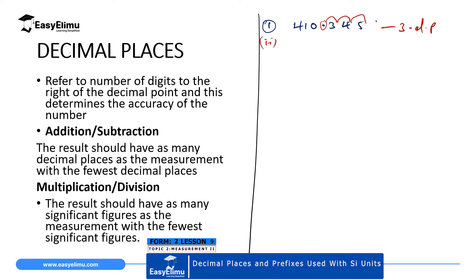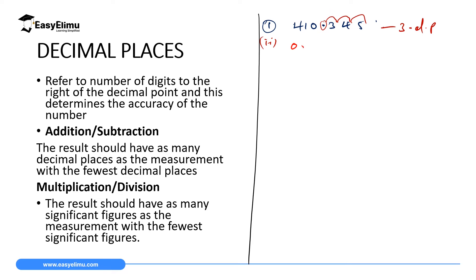Then we have a second case. If we have a number like 0.000456, we will start counting the number of decimal places right from the decimal point. It goes 1, 2, 3, 4, 5, 6. So this number is expressed to six decimal places.